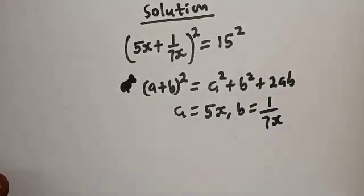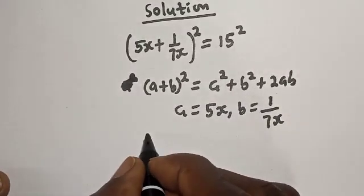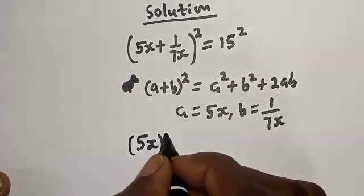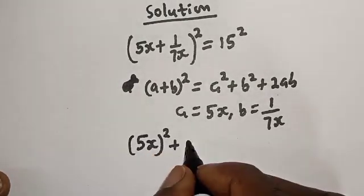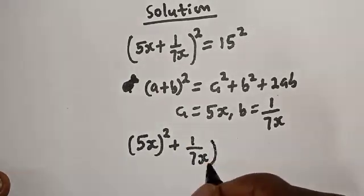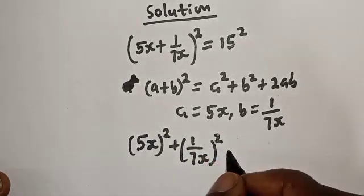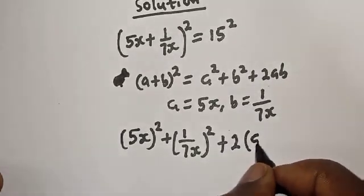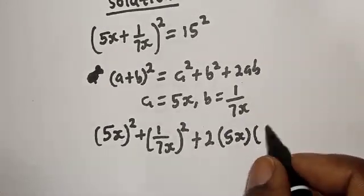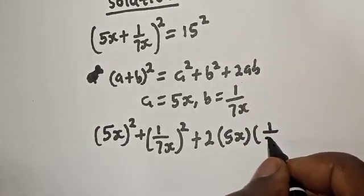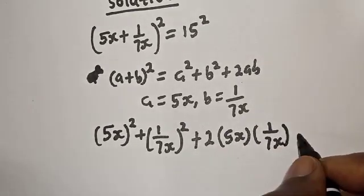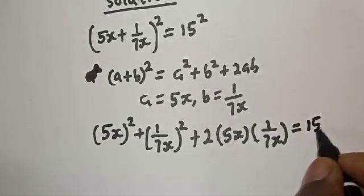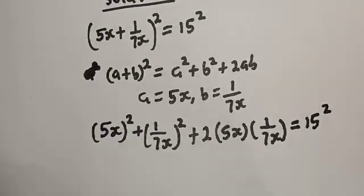Now let's substitute. We have 5s squared plus 1 over 7s squared plus 2 multiplied by 5s multiplied by 1 over 7s is equal to 15 squared.